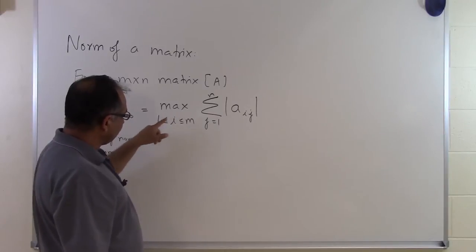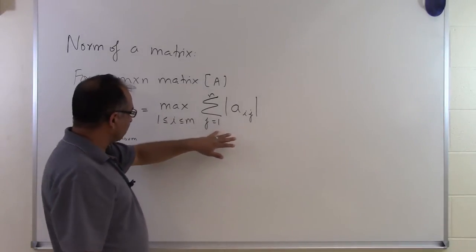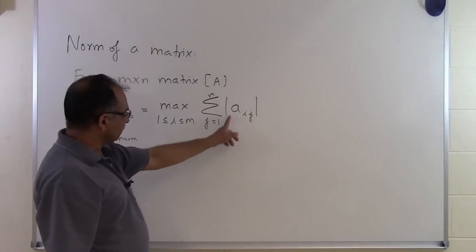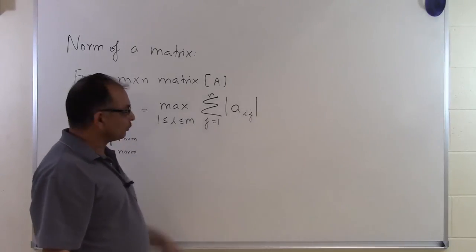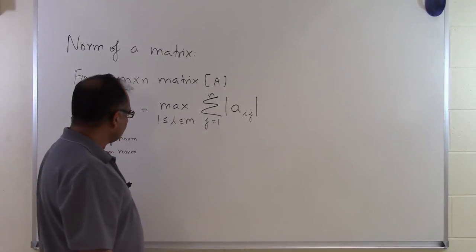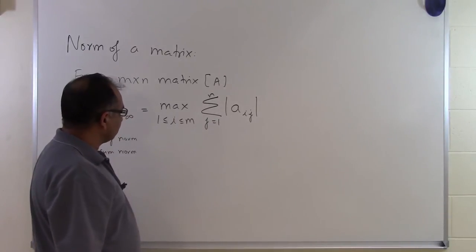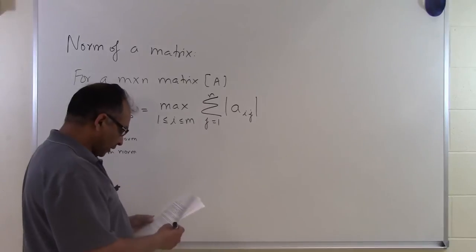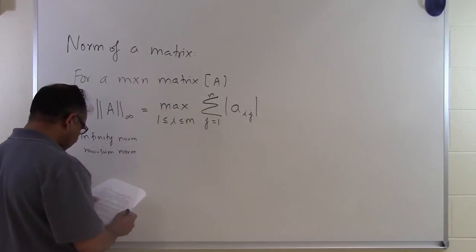Then once you have done that, you are going to find what is the maximum of all those summations. And the way the summations have been taken is that you have to take the absolute value of each element in that particular row and add them all up. This will be clear from an example, but that is what this row sum norm means.